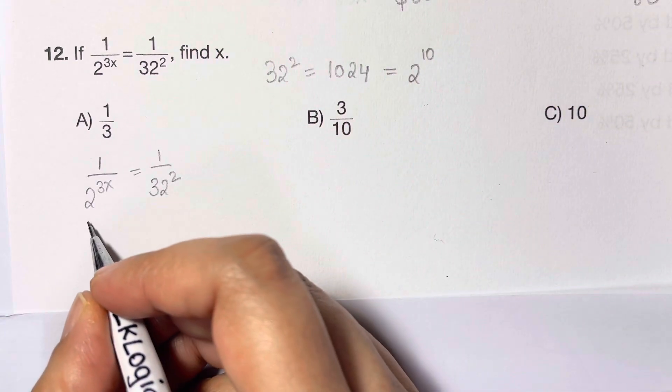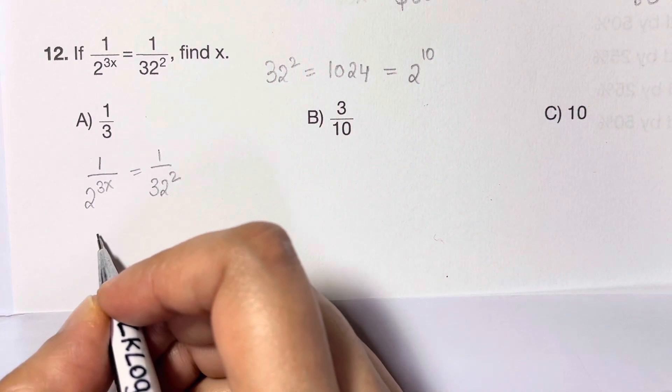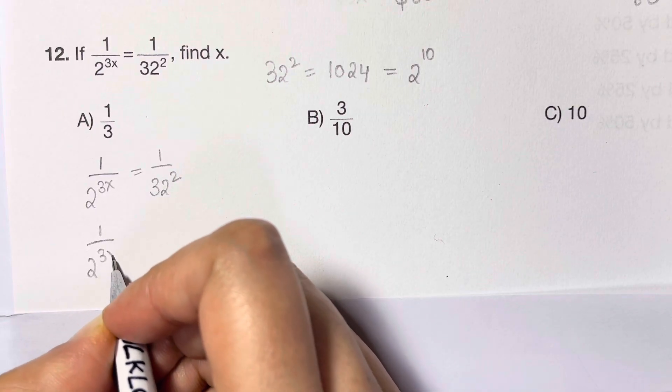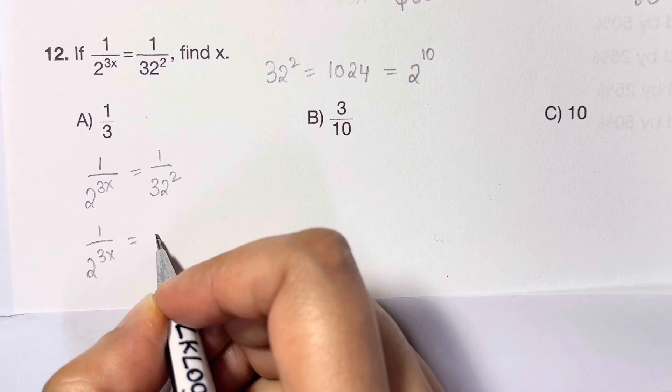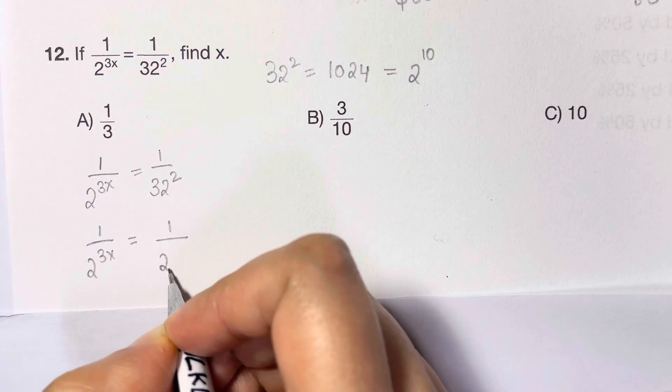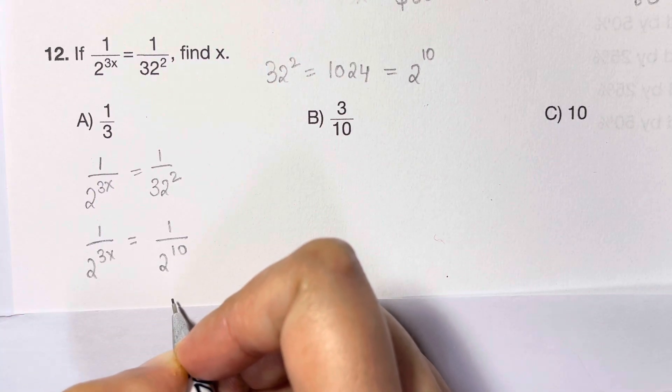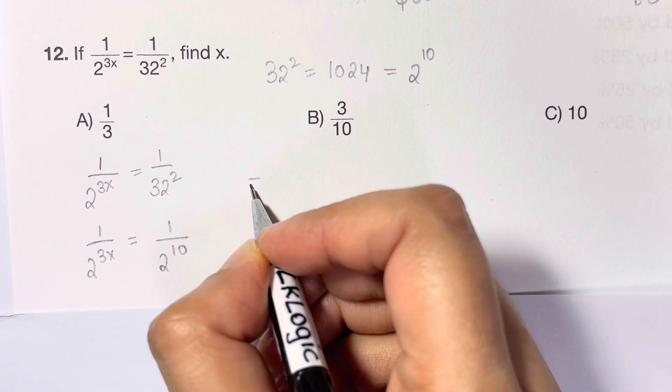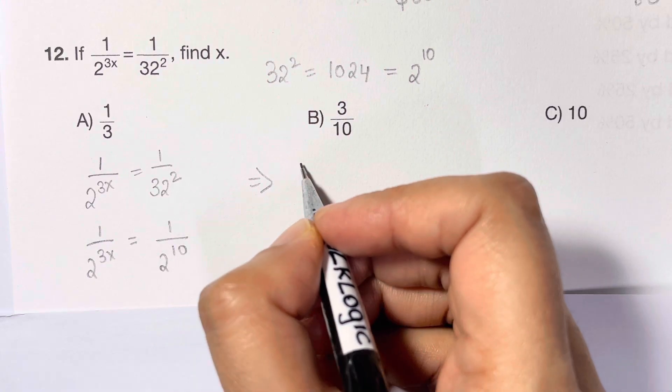Let's write it down: 1 over 2 to the power of 3x equals 1 over 2 to the power of 10. And now we can cross multiply, so we have 2 to the power of 3x equals 2 to the power of 10.